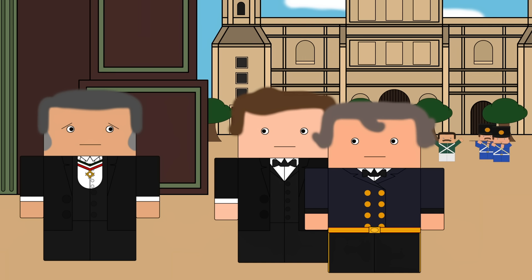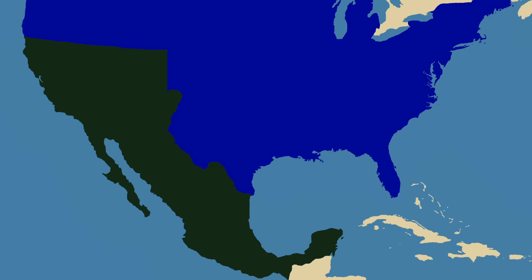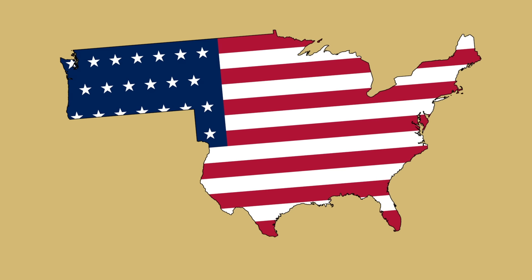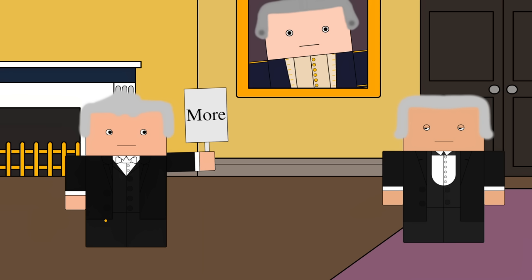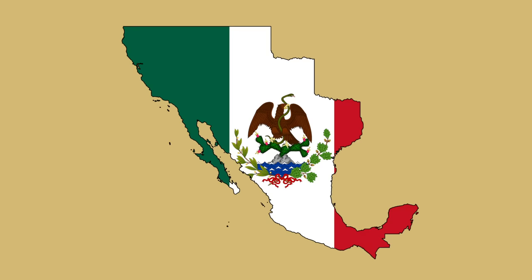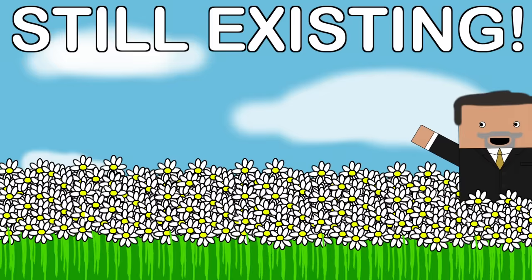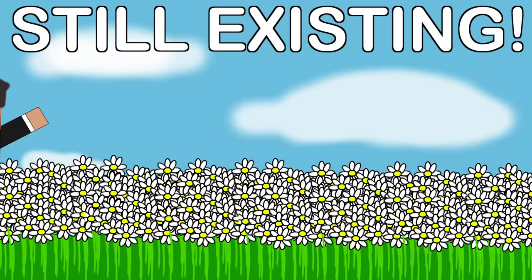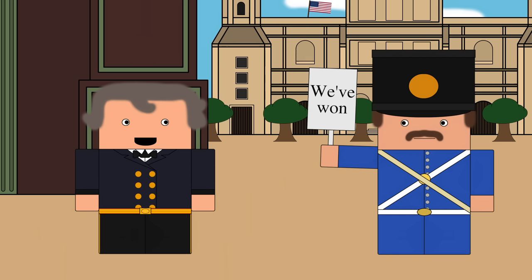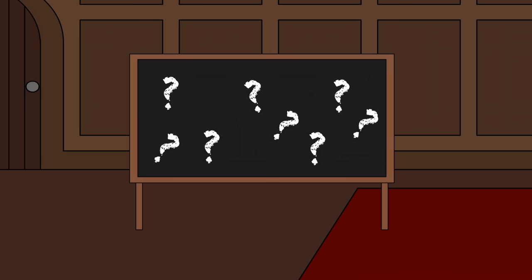In 1848, after defeating Mexico in a war, the United States annexed these territories from it. And there were many notable individuals in the US that weren't happy at simply taking these lands. In fact, they wanted to manifest destiny the entirety of Mexico. Of course, they never did, but given how thoroughly the US won the war, this does raise a question: why didn't the US take all of Mexico?